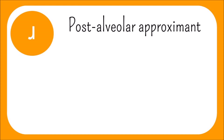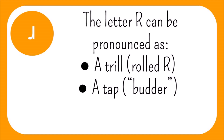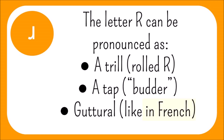R is a rhotic consonant, and in English is most commonly realised as a post-alveolar approximant. This is the sound we see in rabbit and red. However, the letter R is a lot more changeable. It can be a trill, also known as a rolled R. It can be a tap, like how an American English speaker would say it in the middle of the word butter if they were talking fast, and what is often mistaken for a D sound. Or it could be a guttural sound, with the back of the tongue reaching the soft palate.